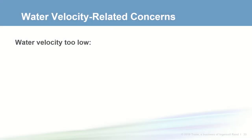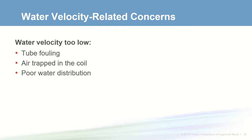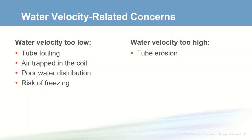The water velocity through coil tubes is determined by the geometry of the coil, including tube diameter and circuiting. Consequences of too low water velocity include tube fouling from sediment or scaling, air trapped inside tubes causing loss of capacity, noise or vibration, poor distribution of water in the coil resulting in non-uniform leaving air temperatures, and a higher risk of water freezing inside the tubes. On the other hand, too high water velocity can cause erosion of inside tube surfaces especially at U-bends, excessive water pressure drop, and noise.